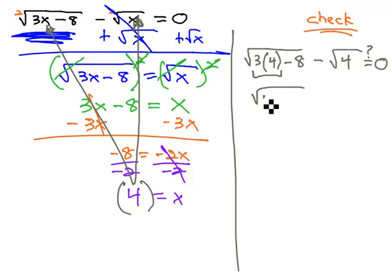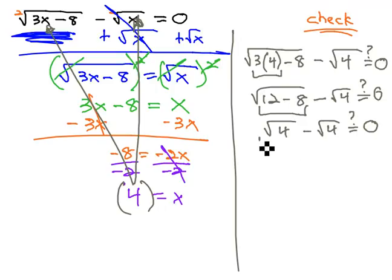Well, 3 times 4 is 12, so we have the square root of 12 minus 8, minus the square root of 4. Hopefully, that's 0. 12 minus 8, that comes out to be 4, minus the square root of 4. Hopefully, that's 0. Taking both square roots, we get 2 minus 2, and sure enough, 2 minus 2 is 0.